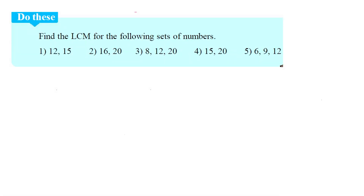Try this problem: find the LCM for the following sets of numbers. The third question uses the numbers 8, 12, and 20. We will first list the multiples of each, then find the common multiples, and then identify the smallest one.